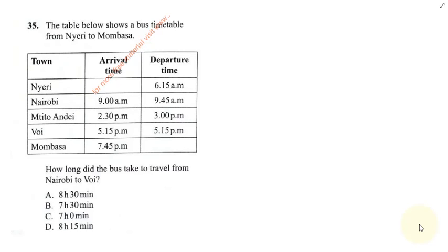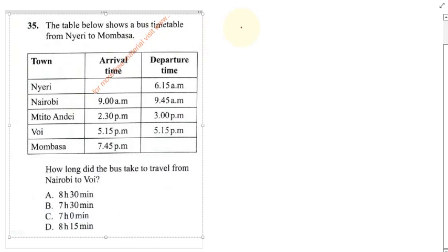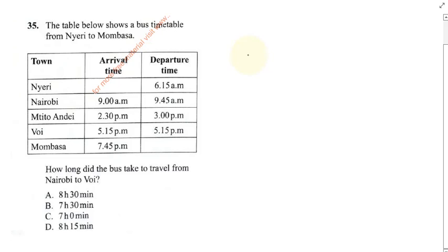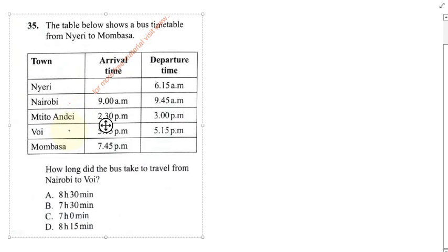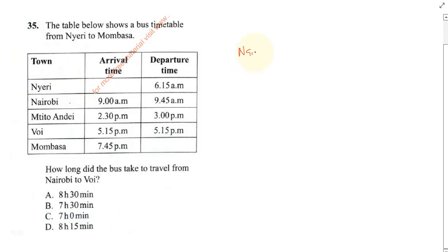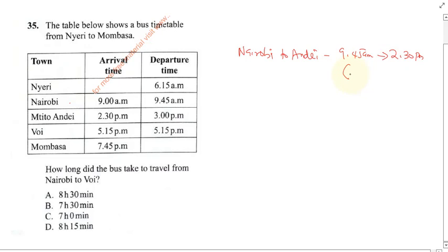This question says the table below shows a bus timetable from Yeri to Mombasa. The question says how long does the bus take to travel from Nairobi to Voi. From Nairobi to Voi, notice from Nairobi it will move to Athi then to Voi. So from Nairobi to Athi it will move from 9:45 a.m. to 2:30 p.m., and between this time it's 4 hours 45 minutes.